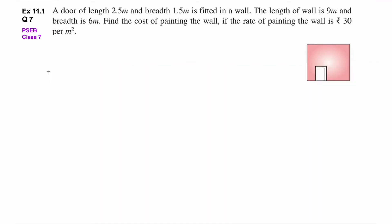A door of length 2.5 meter and breadth 1.5 meter is fitted into a wall. Here they have made a figure. The wall has a door on one side, and the length of the wall is 9 meter and breadth is 6 meter. Find the cost of painting the wall if the rate of painting is Rs. 30 per square meter.